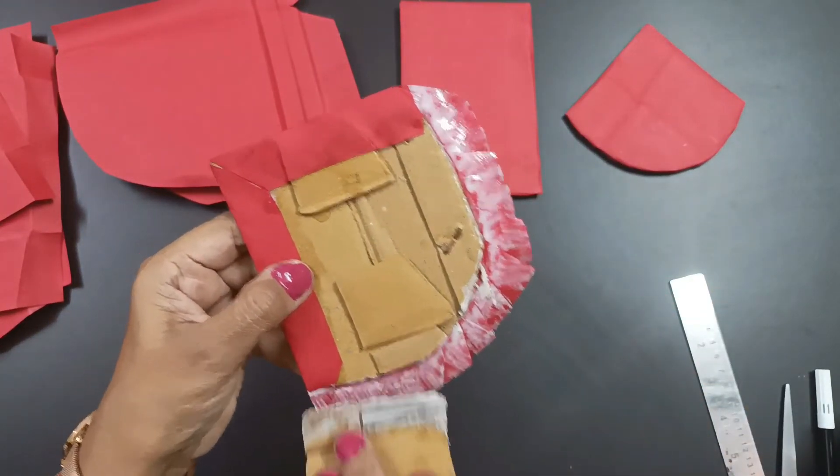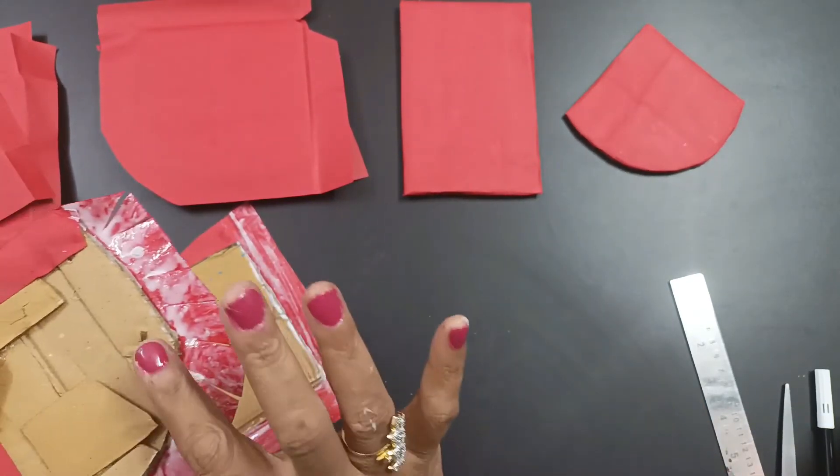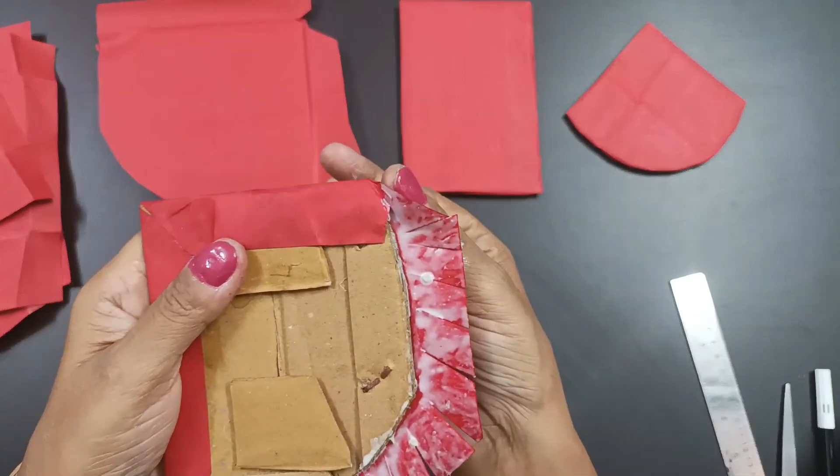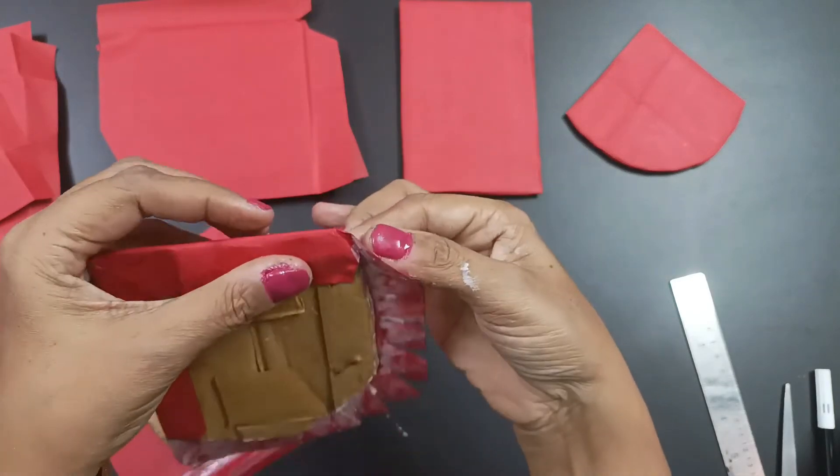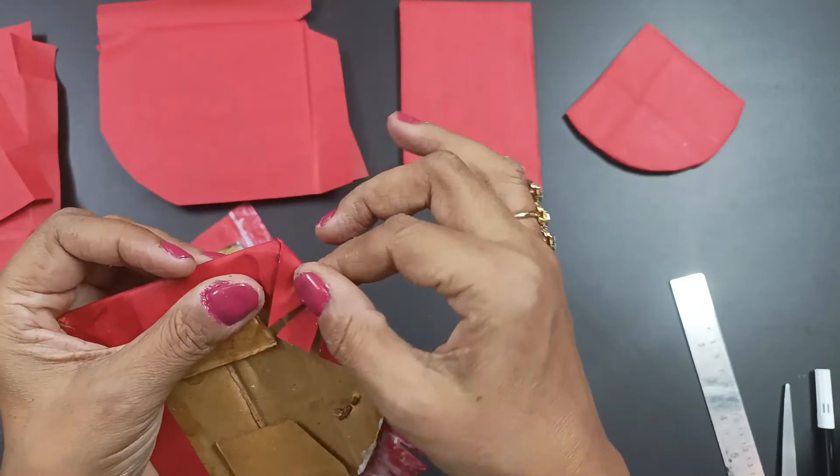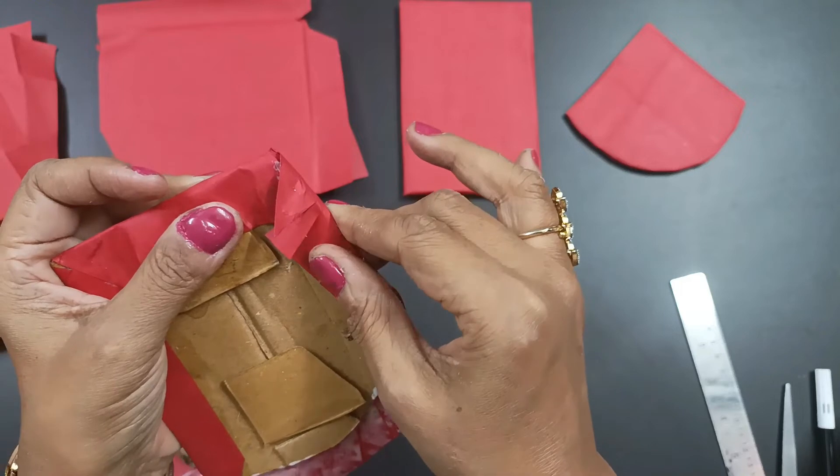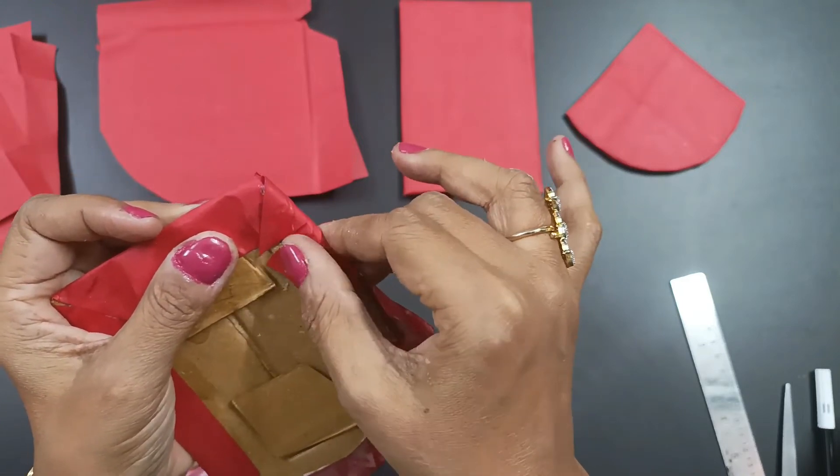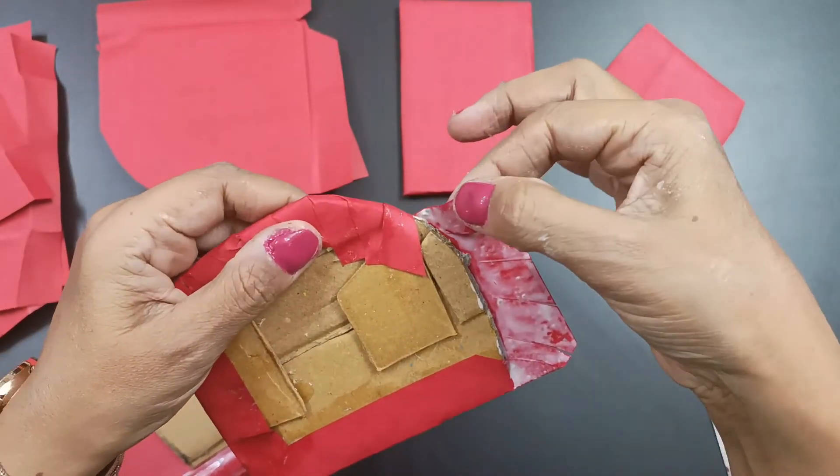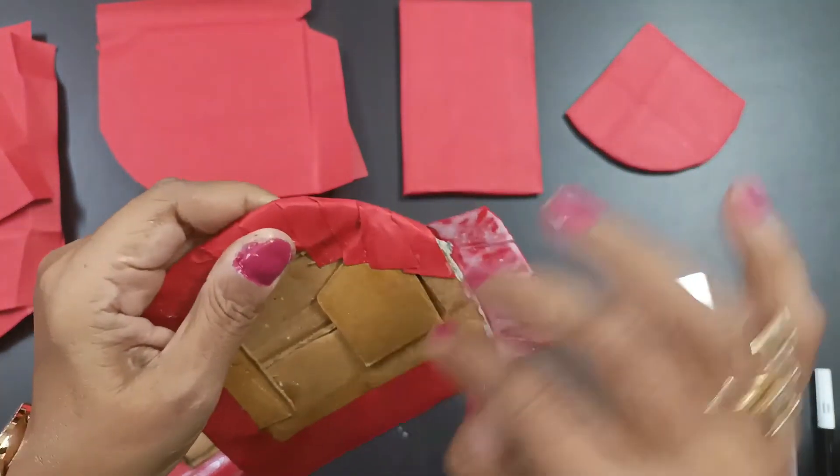I'll apply Fevicol first to the edges so that no gap is in between. Let it semi-dry. See, when I have applied, I kept it aside, then I applied over here, so that by the time I am folding this part, this will get semi-dry. Now when you're folding it, again you will take the thumb pressure like this so that it gets stuck from the corner, exactly from the edge.